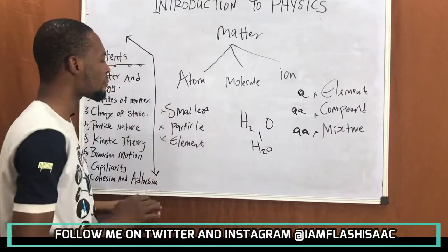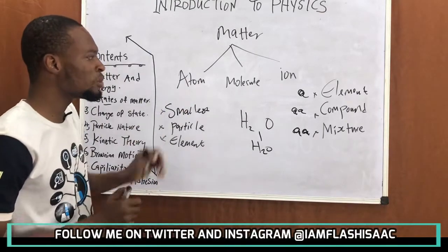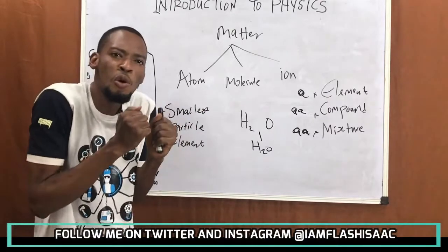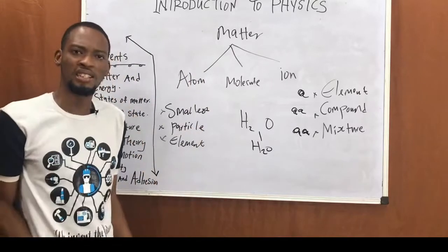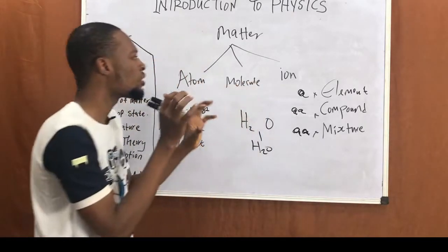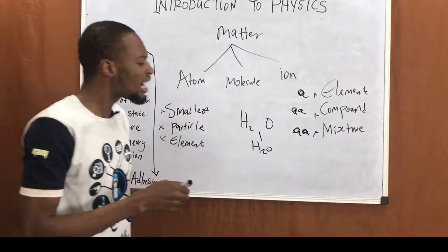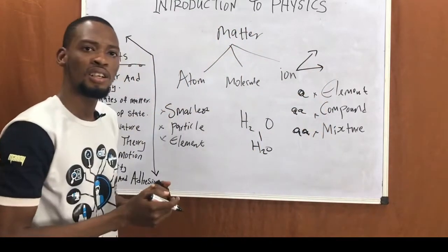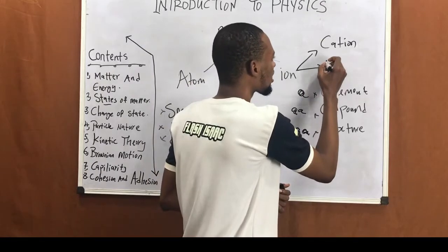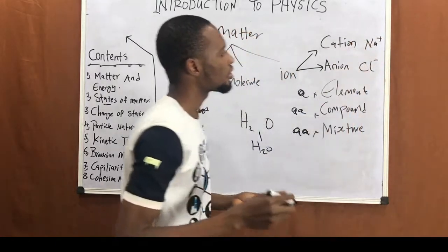An atom is the smallest particle of an element that can take place in a chemical reaction. A molecule is the smallest particle of a substance that can exist on its own and still retain the properties of that substance. An ion is an atom or group of atoms that possesses an electrical charge — either positively charged, called a cation, or negatively charged, called an anion. For example, Na⁺ is a positively charged ion.